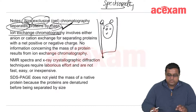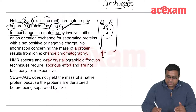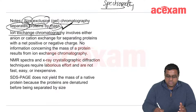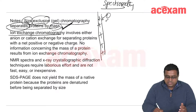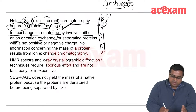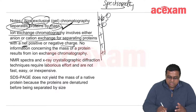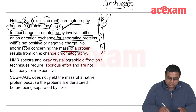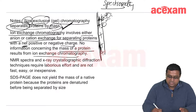In ion exchange chromatography, separation is based on net charge. A resin with positive charges binds negatively charged proteins. There is no mass involved — it depends entirely on net charge (positive or negative). Cation and anion exchange resins are used. NMR (nuclear magnetic resonance) and X-ray crystallography give the structure of a protein — how exactly it looks — and are used in drug development to analyze protein-ligand interactions.